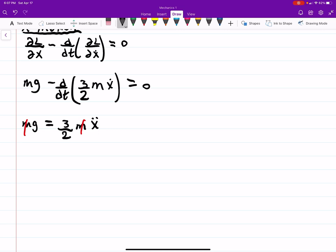And then we see that x double dot, or acceleration, is 2g over 3. So that's how we could use the Lagrangian to solve this problem. Hopefully that helps somebody.